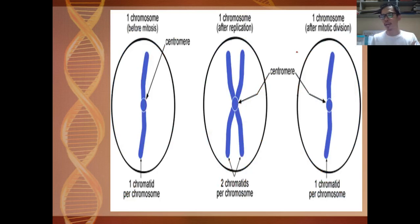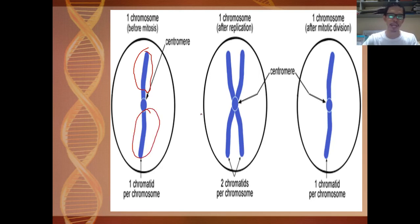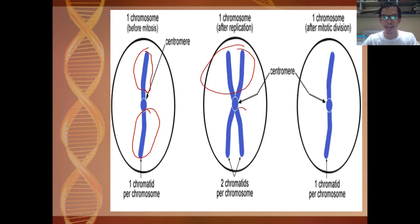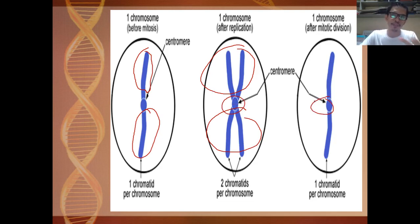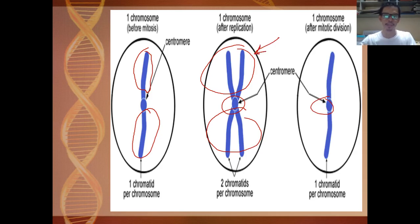If we look at how DNA replication appears in a chromosome: before replication, this is what a chromosome looks like. After replication, you now have two sets of chromatids, with the centromere at the middle. That is how the chromosome looks after replication.